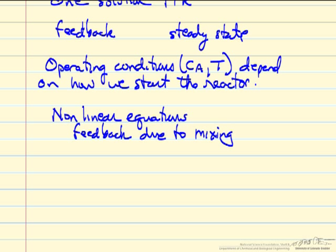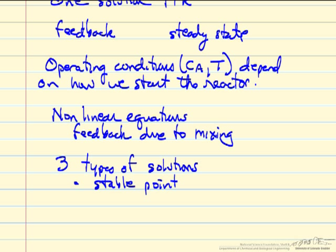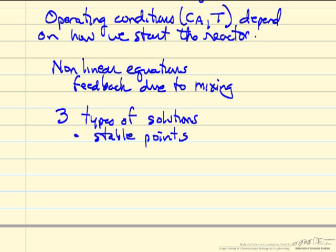As we saw, we could have three solutions for this simple case. Not all solutions, however, are the same. There are actually three types of solutions. It doesn't mean those three solutions are one of each type. It means we have the possibility of each of those solutions being one of these types. The one that you might expect, the stable points, namely it'll run in steady state at that condition.